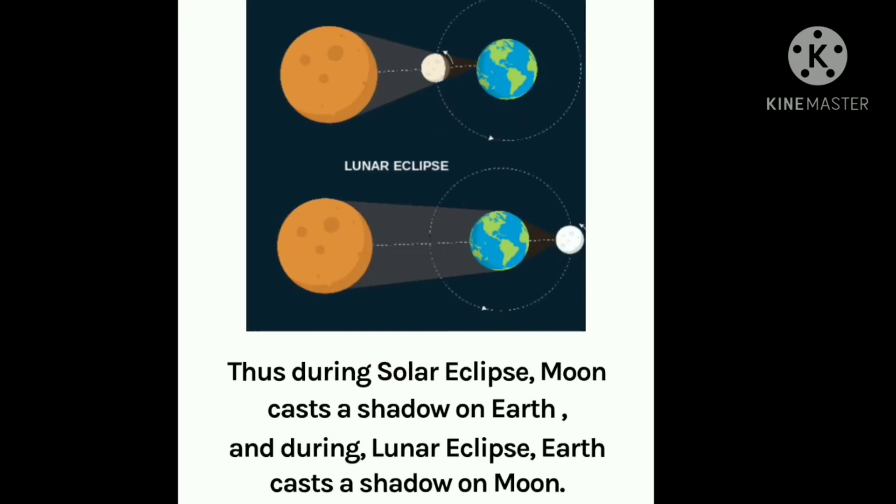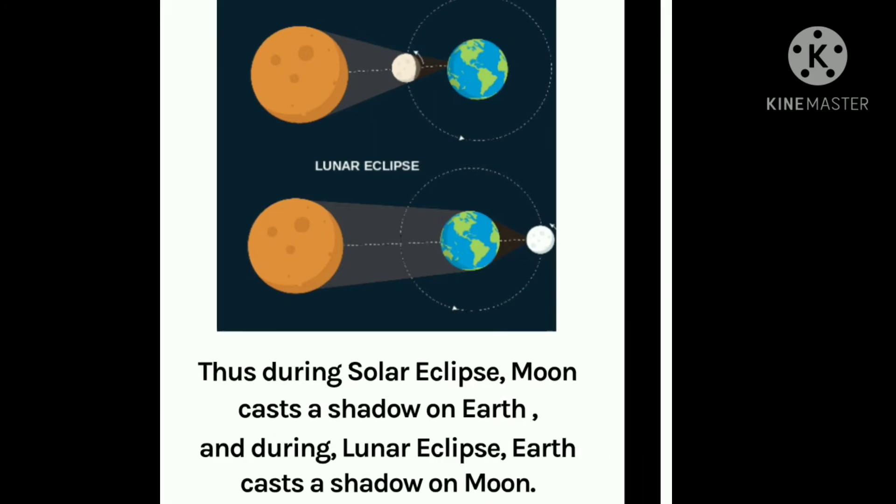Thus, during solar eclipse, moon casts a shadow on earth. And during lunar eclipse, earth casts a shadow on moon. Isn't this interesting?